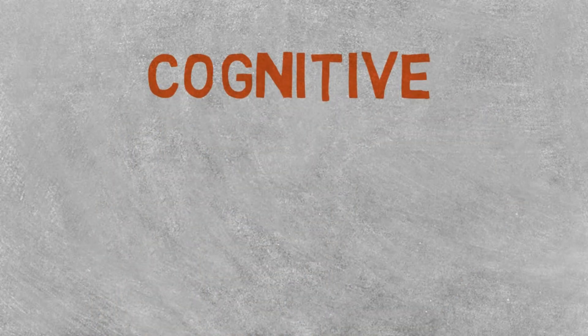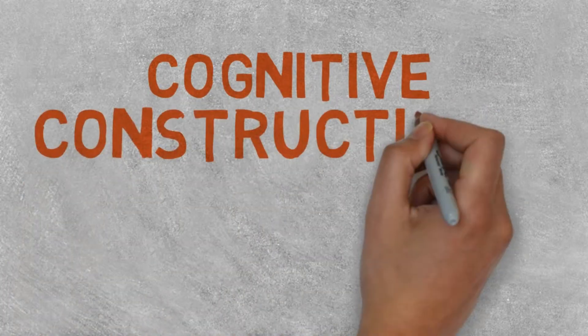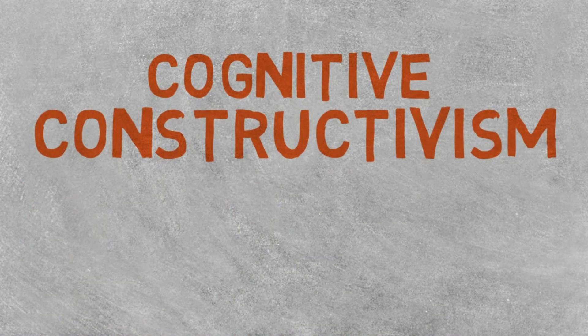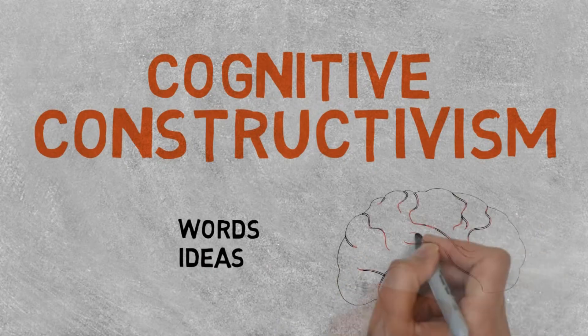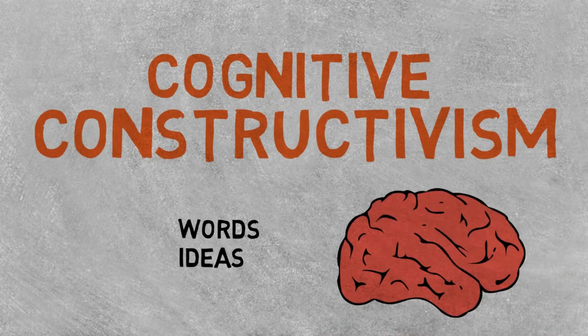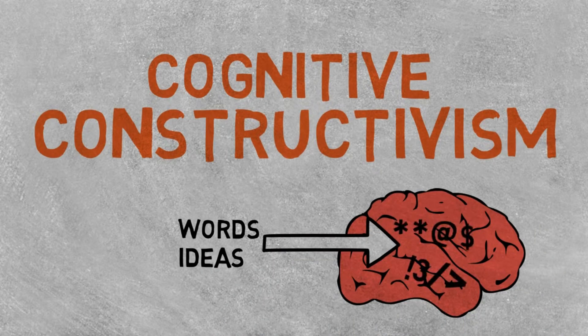Hey everyone, last week we went over social learning theory and observational learning. Today we'll look at the Cognitive Constructivist Learning Theory. Cognitive Constructivism differs from other learning theories in that it recognizes that our brain symbiotically stores data. This theory focuses on what's going on inside the learner's head, versus the other theories that focus solely on behavior.